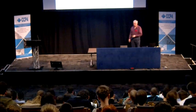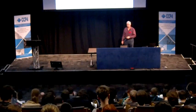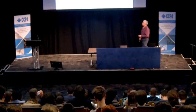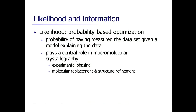I'm going to talk about information content and molecular replacement, but trying to put it more in the context of the likelihood scores that you've been hearing about. We're very keen on likelihood — it's a probability-based optimization method, where the likelihood is the probability of having measured the data set that you did measure, given a model that explains the data. The better you could have predicted the data from the model, the better the model is. This is playing a more central role in crystallography over time, with experimental phasing including SHARP and other programs, and molecular replacement and structure refinement.